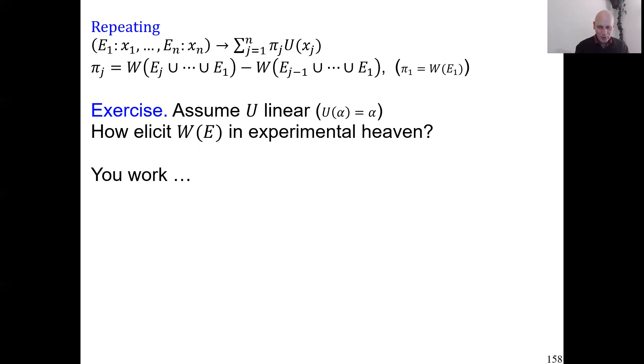Now I present a solution to you. The easy way to go about is very much like we did with the de Finetti betting, measuring subjective probabilities. Take here this prospect, giving you 1 if E happens, zero otherwise. Find the certainty equivalent α.